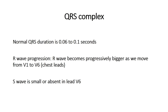In terms of the progression of the QRS complex across the precordial leads — V1, V2, V3, V4, V5, and V6 — you should see an increase in the size of the R wave as you move from V1 to V6.